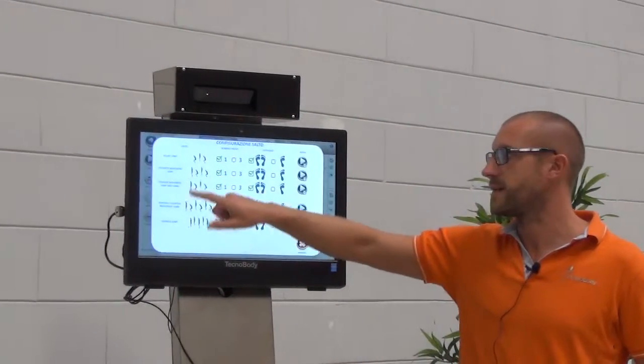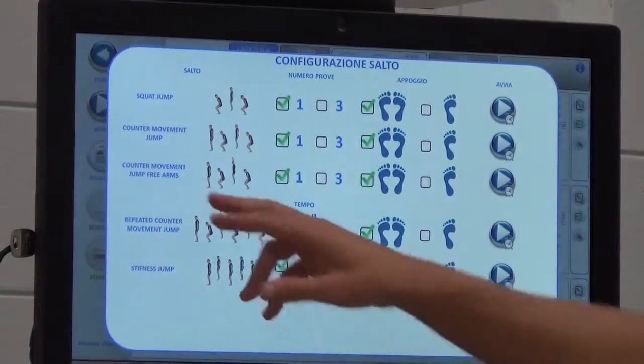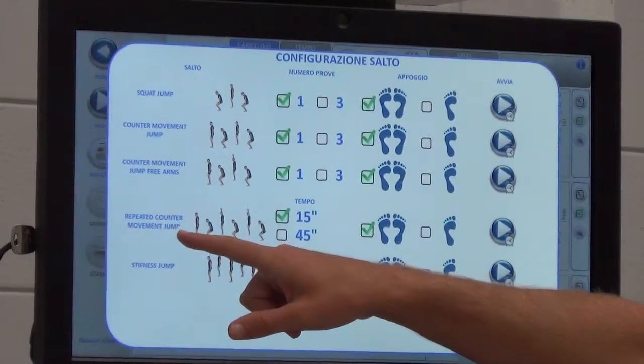Starting on the top you can find the squat jump, the counter movement jump, the counter movement jump with the free arms or with the use of the arms.